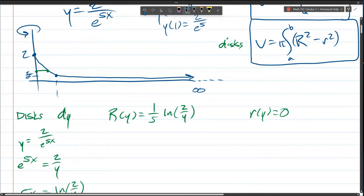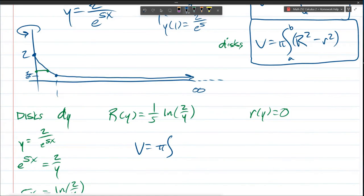Alright, let's go ahead and plug all this in. There's a pi in the front. R squared dy. Alright, y values. Well, I've already written down it goes from 0 to 2. And we'll just plug in R of y now.